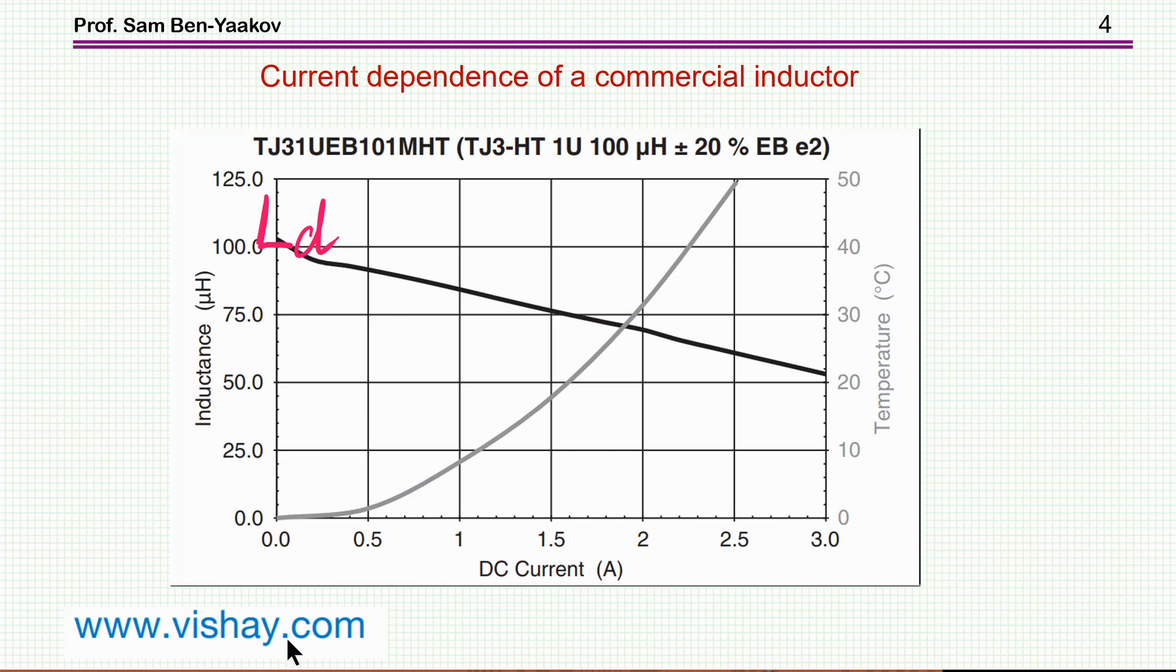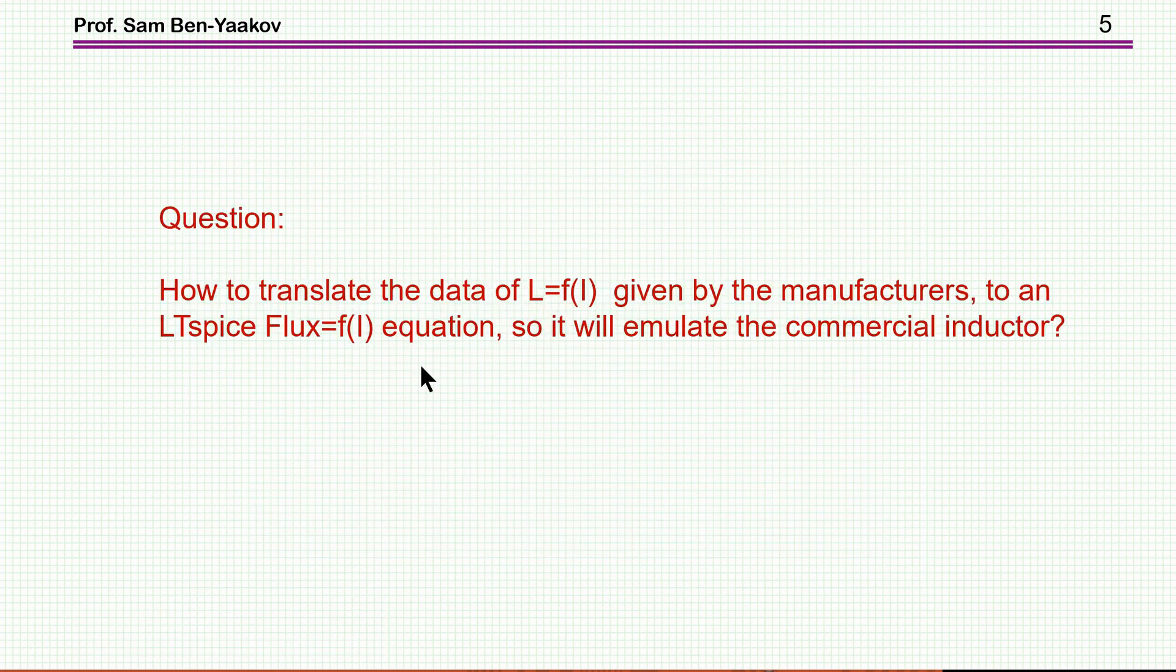In this particular inductor, this is a Vishay, it's just an example. We start with 100 micro-Henry and going down to about 50 when the DC current is 3 amps. So this is the information that is given by vendors. And the question was how to translate the data of the inductance as a function of the current given by manufacturer to an LTSpice equation for the flux.